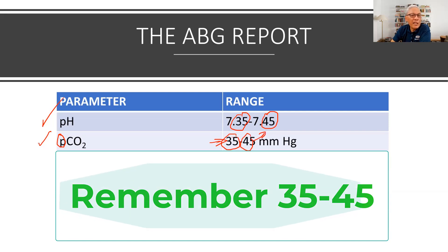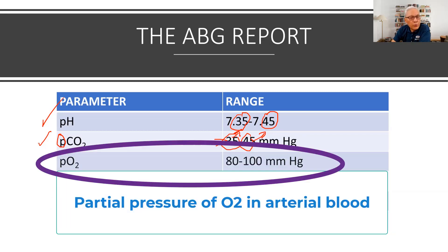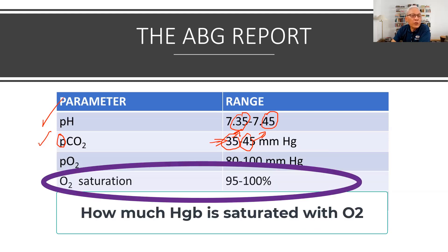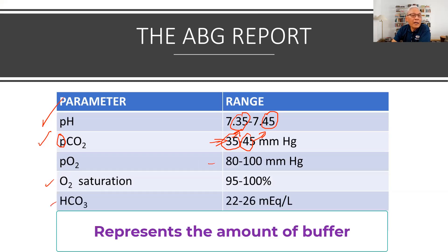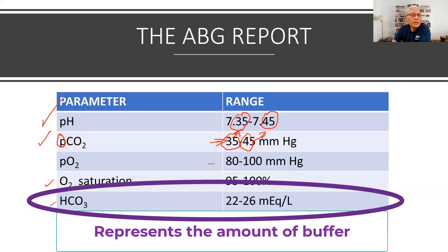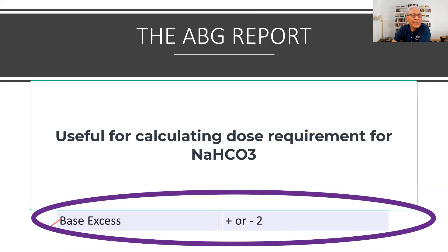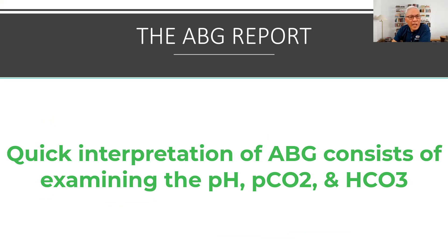It is a lot easier to remember those numbers. The PO2, or partial pressure of oxygen, is anywhere from 80 to 100. The O2 saturation, or the amount of oxygen that hemoglobin packs, is anywhere from 95 to 100. The bicarb is anywhere from 22 to 26 mEqs per liter, and base excess is plus 2 or minus 2.